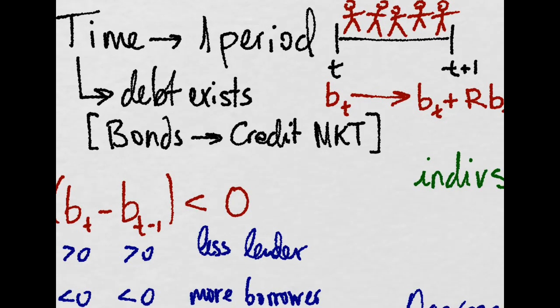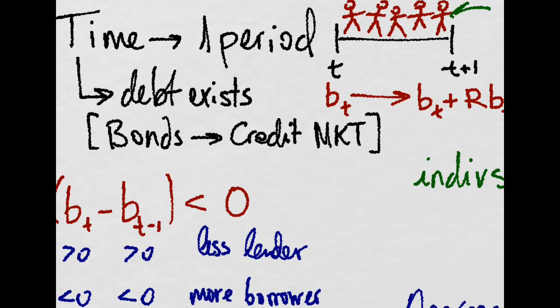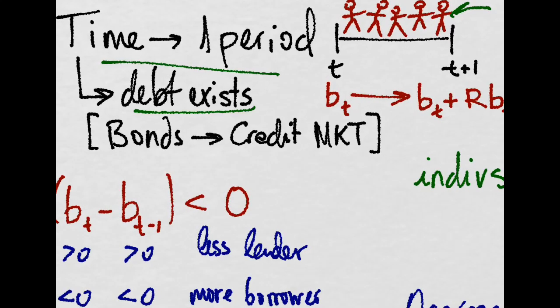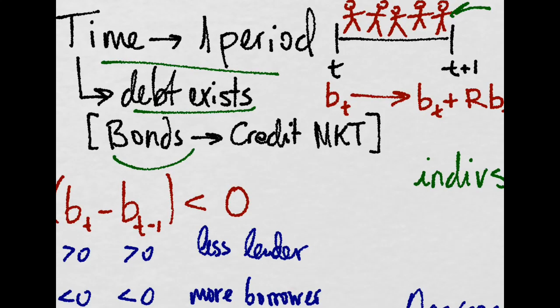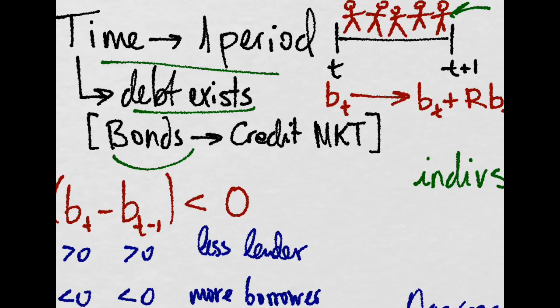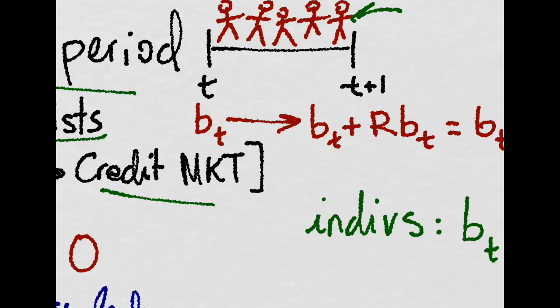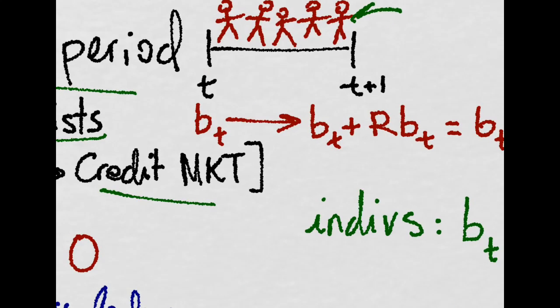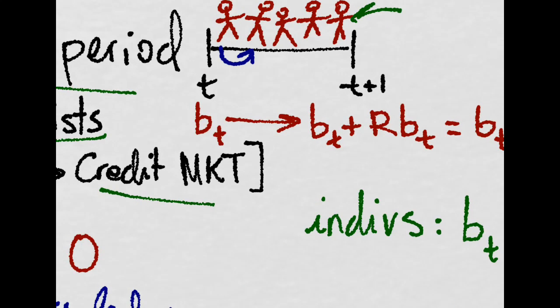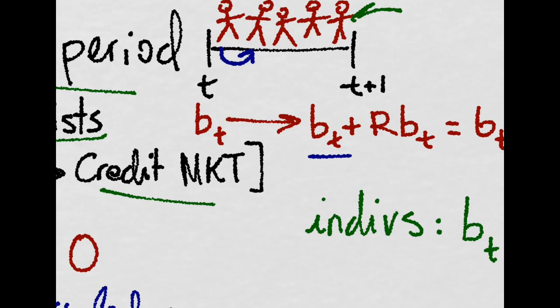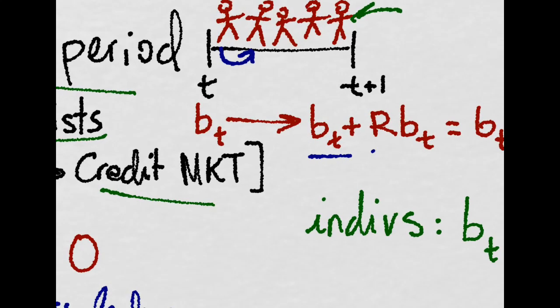So now we have many people and we have time. We have one period of time. When there is time, debt exists. Debt takes the form of bonds, which are exchanged in the credit market. If one of these guys lends a bond to another guy, then after one period, he will get the same bond plus some interest,